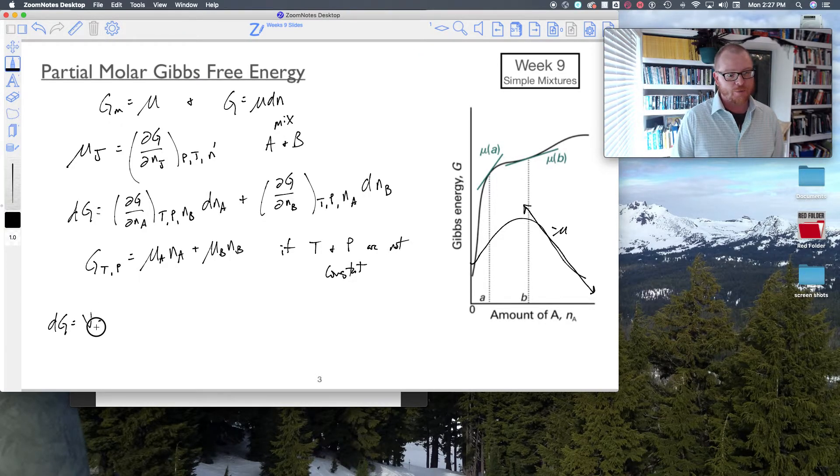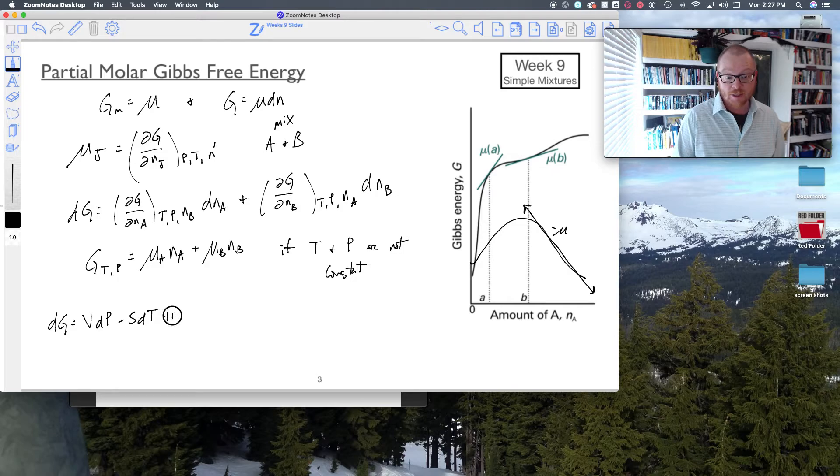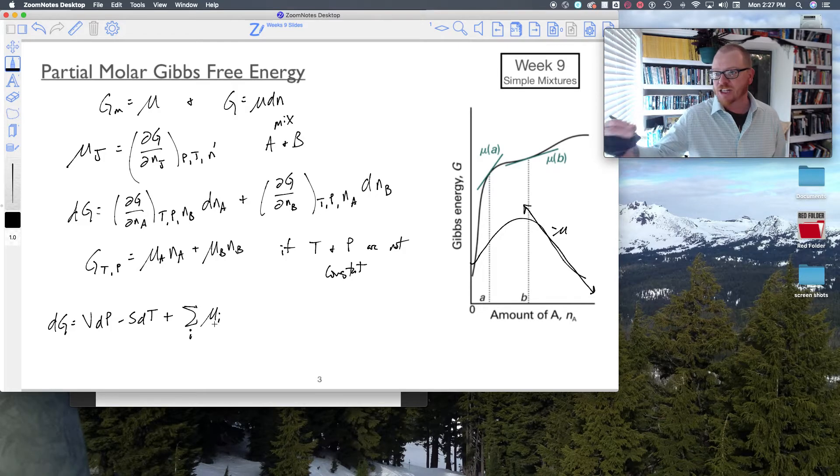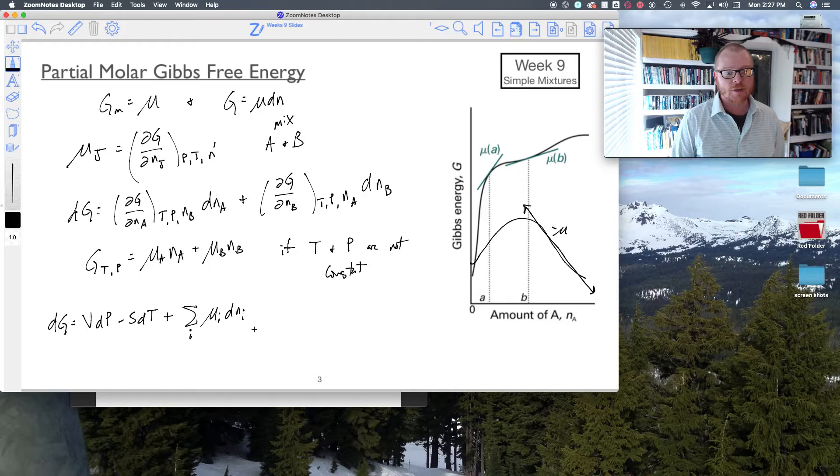And so that's going to go VdP minus SdT plus the sum of all chemical potentials of species I. So the sum like I, J, K, L, however many things are in our mixture, times the change in number of moles.